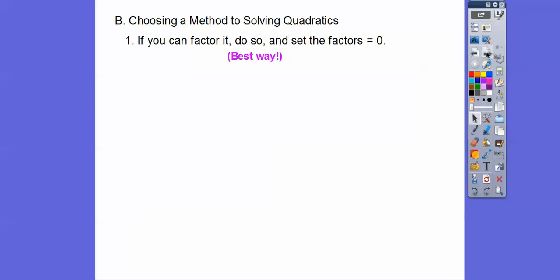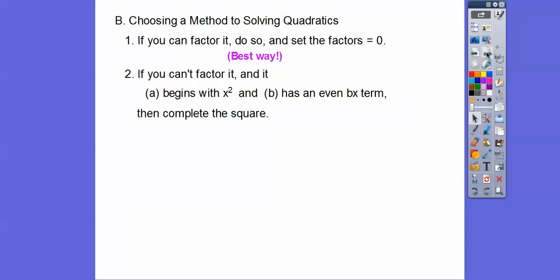So the first method is if you can factor it, then go ahead and factor it and set the factors equal to 0. It's the best, quickest, most efficient way. If you can't factor it and if it begins with a 1x squared and it has an even bx term, then complete the square. I'll give you a couple examples like that. And then if those don't work, then go ahead and use the quadratic formula. So if it's like a 3x squared and it doesn't factor, or if we've got an x squared minus 7x, which is an odd number, I wouldn't want to complete the square with it. But if you can factor it, factor it, you guys.